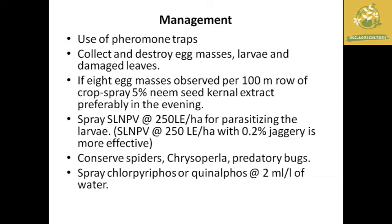For management of Spodoptera litura, use pheromone traps and collection and destruction of egg masses, larvae, and damaged leaves. Spray 5% neem seed kernel extract in the evening, which is effective against Spodoptera litura. Spray Spodoptera litura nucleopolyhedrovirus at 250 LE per hectare for parasitizing the larvae, and add 0.2% jaggery to attract more larvae. Conserve spiders, Chrysoperla, and predatory bugs in the field. The final chemical option is spraying chlorpyriphos or quinalphos at 2 ml per liter of water.